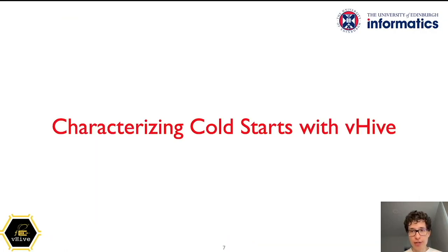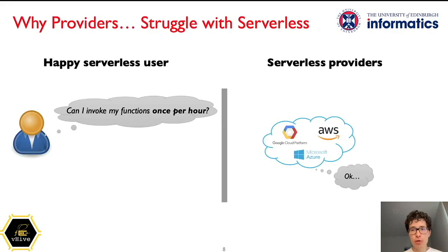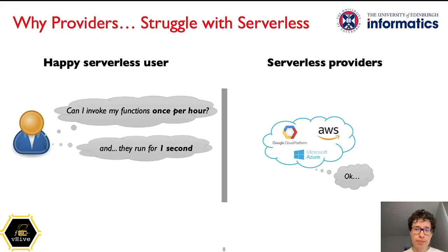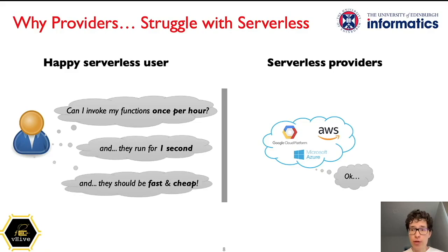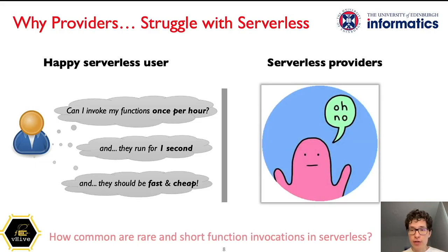Using VHive, we investigated the cold start delays in a state-of-the-art serverless system. The providers are ready to deliver cheap and quick solutions, but the problem is that users aren't grateful. Once they hear of serverless prices and efficiency, they tend to take serverless clouds to their limits. For example, today providers have to run functions that are invoked very rarely — like once per hour — as a norm. At the same time, they deploy really short functions, and users nevertheless want their functions to run fast without willing to pay a lot.